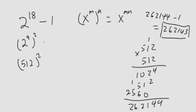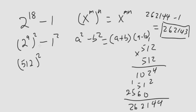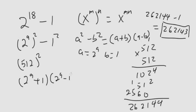Or what a lot of people have been doing is using the difference of squares: a squared minus b squared is equal to a plus b times a minus b. So this here can be rewritten using that identity, where a is equal to 2 to the 9 and b is equal to 1.